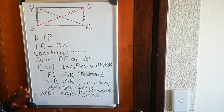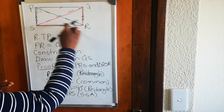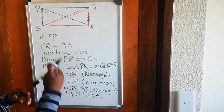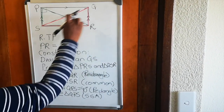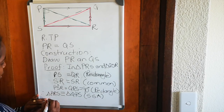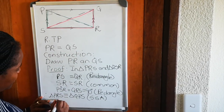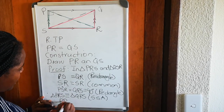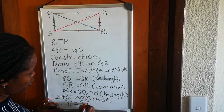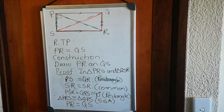If these two triangles are congruent, which means they are exactly the same, therefore the corresponding lines are equal. Therefore, we have proven our theorem: line PR, which is a diagonal, is equal to QS. That's how we do the proof.